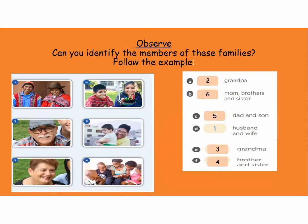¿Cómo digo abuelito? Puedo decir grandfather o también puedo decir grandpa. ¿Cómo digo abuelita en inglés? Grandmother o grandma. ¿Cómo digo mamá en inglés? Mother. O puedes decir mom. Papá, puedes decir dad o puedes decir father. De cariño, daddy — papito. A mamá, mamita — mommy. ¿Cómo digo hijo? Son. ¿Cómo digo hija? Daughter. ¿Cómo digo bebé? Baby. Continuamos.